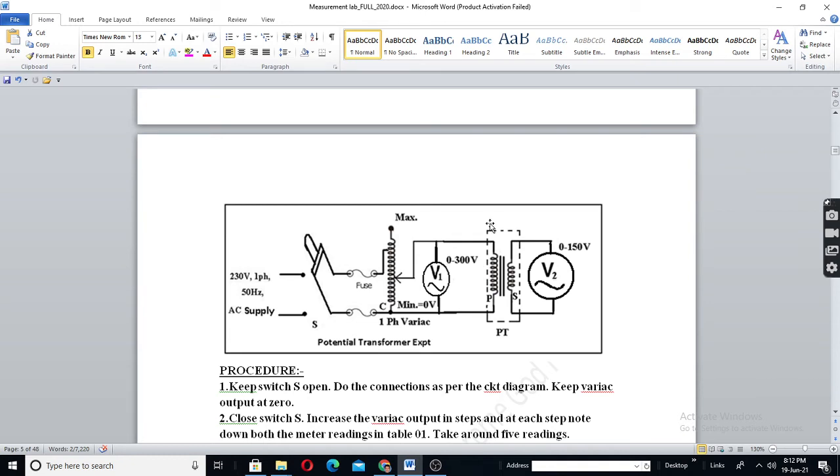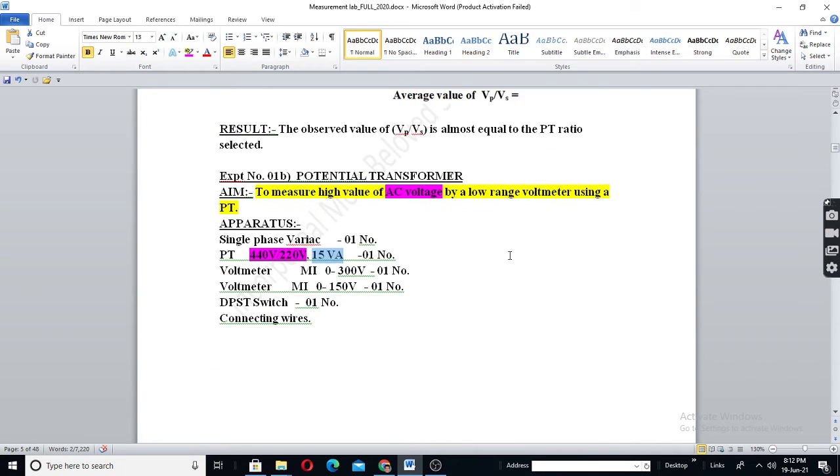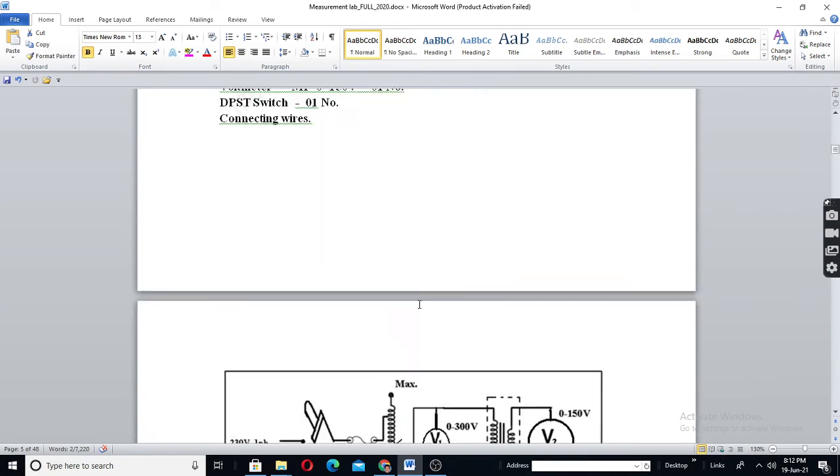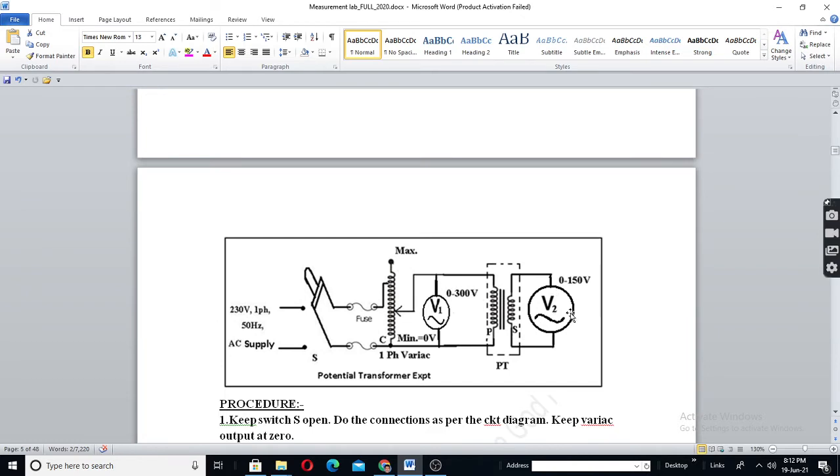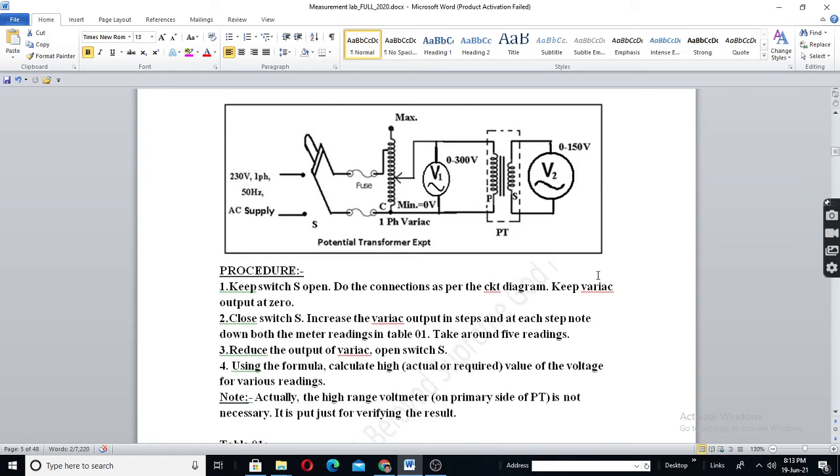If this is say 100, here it is 2 is to 1. Then what reading we get? V2. V2 multiplied by 2 will be equal to V1. So, if there is no V1, you can calculate V1 just by reading V2 and multiply by 2. Because, this is 440 by 220. So, here this will be low range voltmeter. Since this is 2 is to 1, we will have here 300 volts, 150 volts.